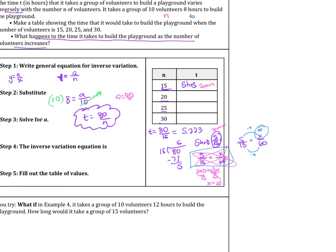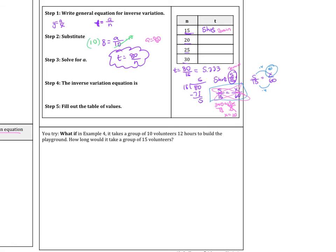Number 20. So 20 volunteers is pretty fast. 25 and 30. So if you can, see if you can figure out the hours and minutes just as a challenge. And then see if you can do this problem down here. It takes a group of 10 volunteers 12 hours to build a playground. How long would it take a group of 15 volunteers?